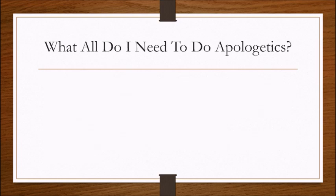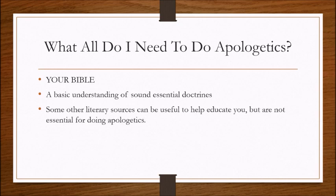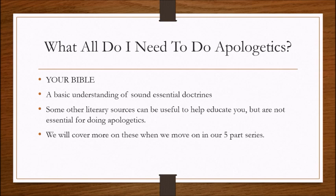The question you're probably asking yourself is: what do I need in order to engage in apologetics? Number one, your Bible. You also need a basic understanding of sound essential doctrines, and some other literary sources that can be useful to help educate you, but are not essential for doing apologetics — they can help, but they aren't essential. We will cover more of these as we move on in our five-part series, since we're only on part one and just giving an introduction.